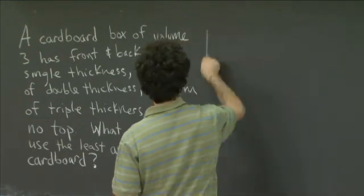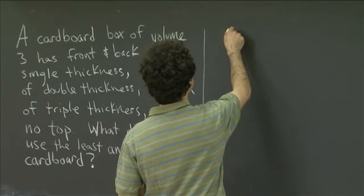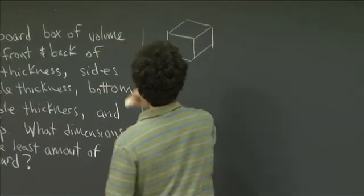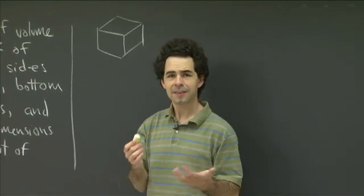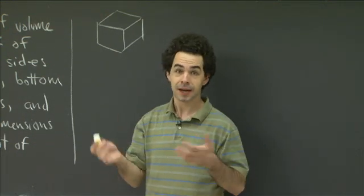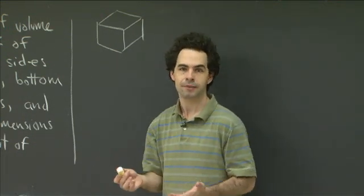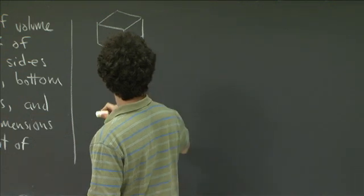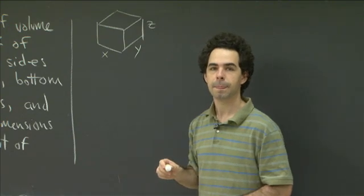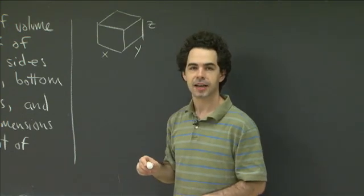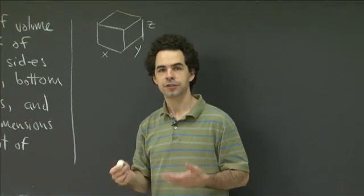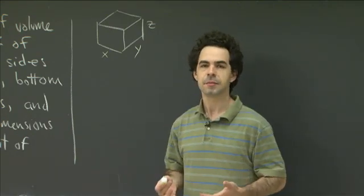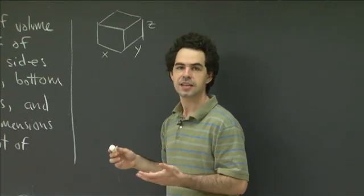To start, I'd like to draw a little picture of a box. Here's my cardboard box — its top is going to be open. We want to figure out what its dimensions should be in order to minimize some expression, so let's give them names. We can call one of them x, one of them y, and the height z. So if we give the box dimensions x, y, and z, we need to ask: what is its volume, and how much cardboard is used? The volume of this box is just xyz, and that has to equal 3.